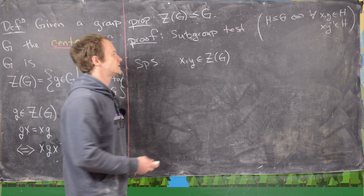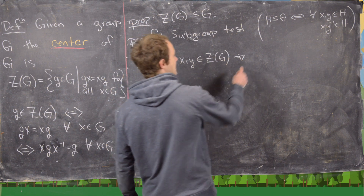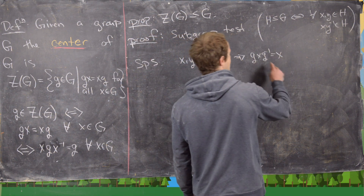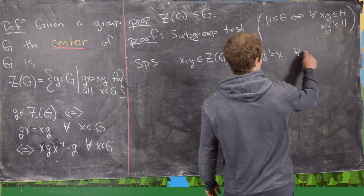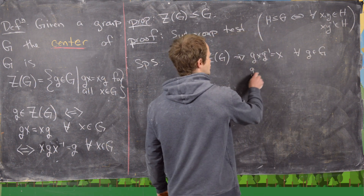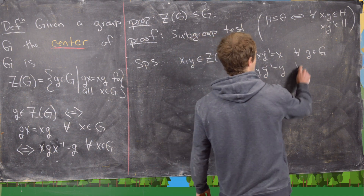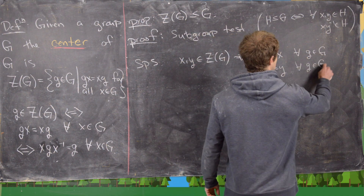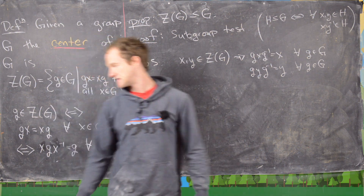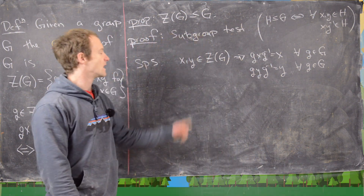So let's suppose that x and y are in the center of G. That tells us that gxg inverse equals x for all g in G, and also gyg inverse equals y for all g in G. So that's our entry fee into the center given by this definition.